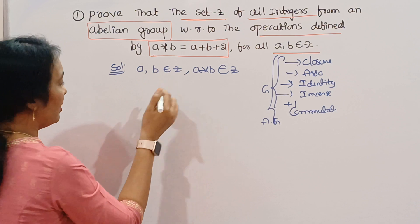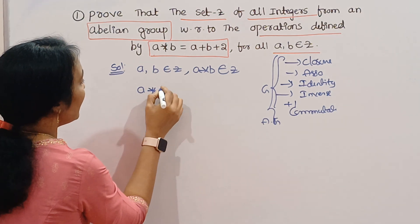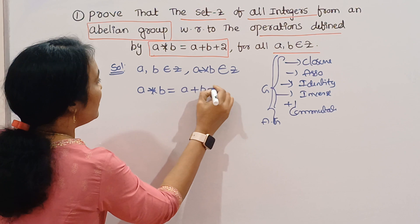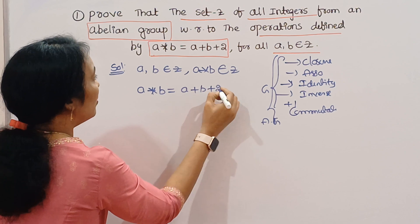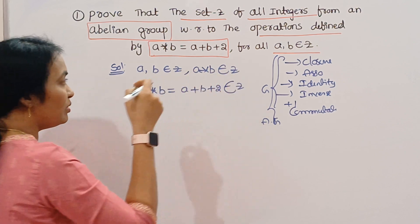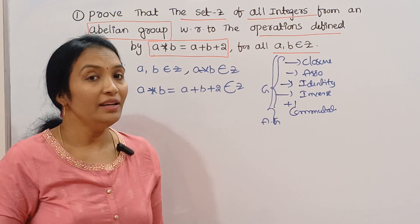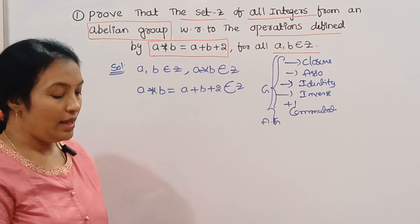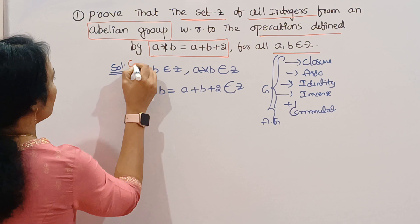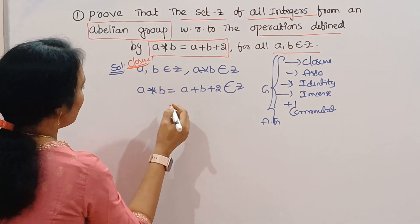This is the set. We have A plus B and A star B — that is A plus B plus 2. The given set is related to integers. It holds the closure law.